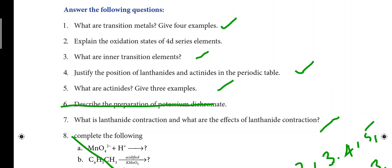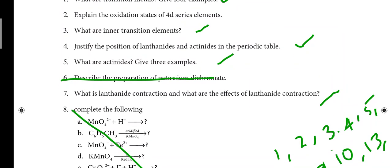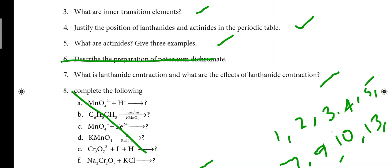So: what are inner transition elements, what are F block elements — these are the same. The third question is: justify the position of lanthanides and actinides in the periodic table. Lanthanides and actinides are F block elements.